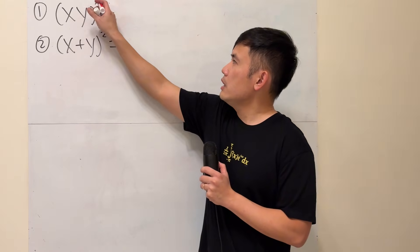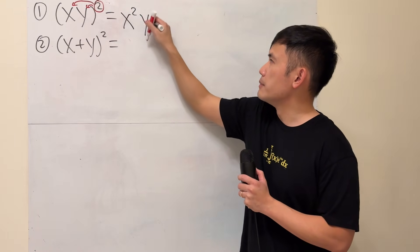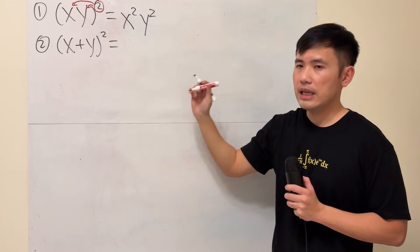Well, for the first one, if you just distribute the exponent and say the answer is x squared times y squared, this is actually correct.